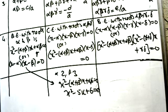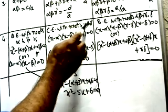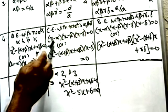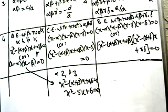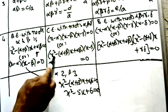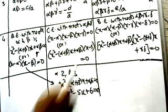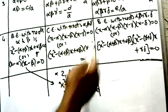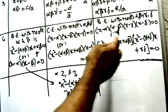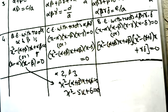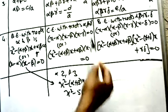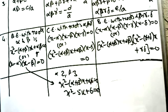For three roots, to find the cubic equation, we use (x - α)(x - β)(x - γ) = 0, or equivalently [x² - (α+β)x + αβ](x - γ) = 0. For four roots, to find the biquadratic equation, we use (x - α)(x - β)(x - γ)(x - δ) = 0, or group them as [x² - (α+β)x + αβ][x² - (γ+δ)x + γδ] = 0.